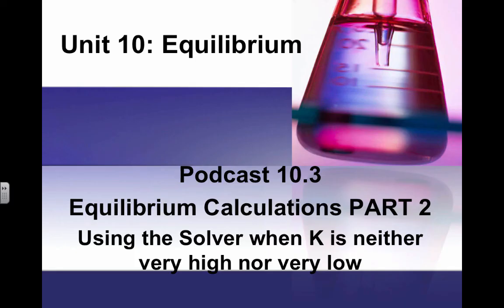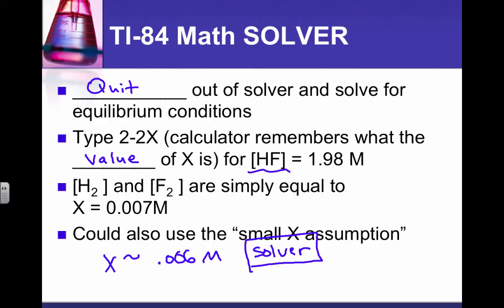All right. Well, that's it for the example one, the part one. In our next podcast, we'll look at a different example where the value of K is different from the one we just did. In this one, it was really, really low. Next, we're going to look at one where it's kind of in the middle. All right. See you soon.